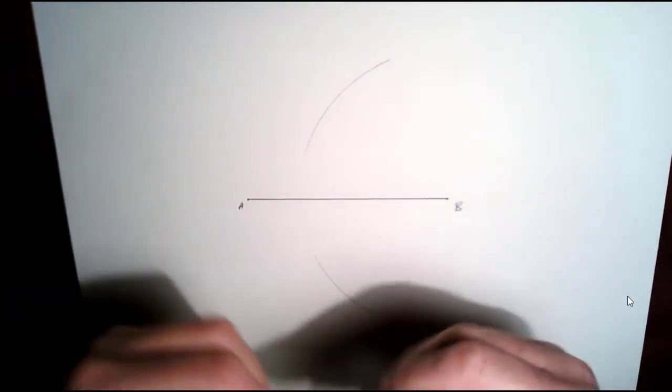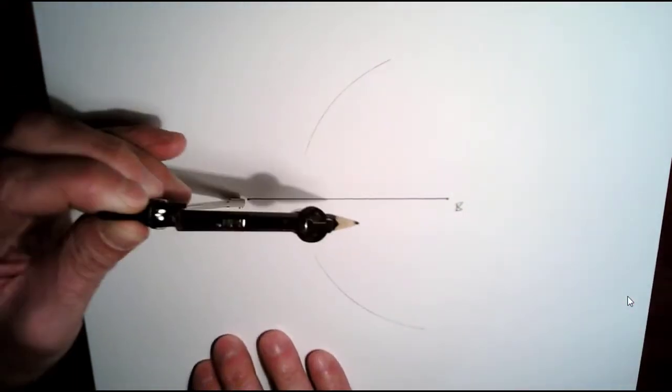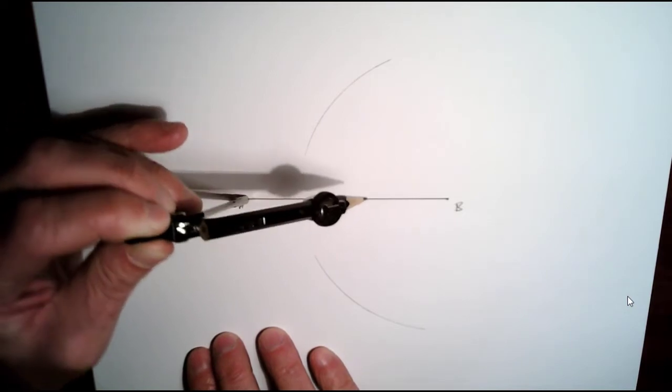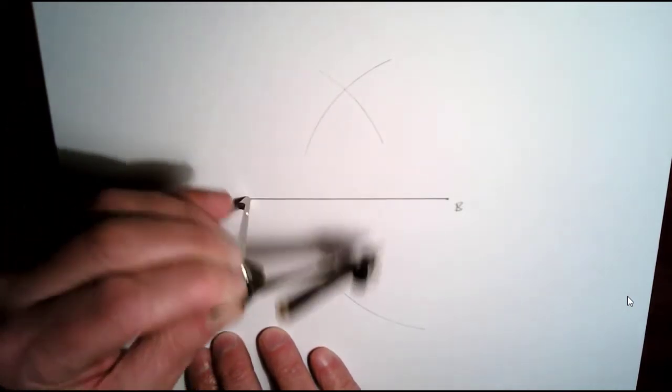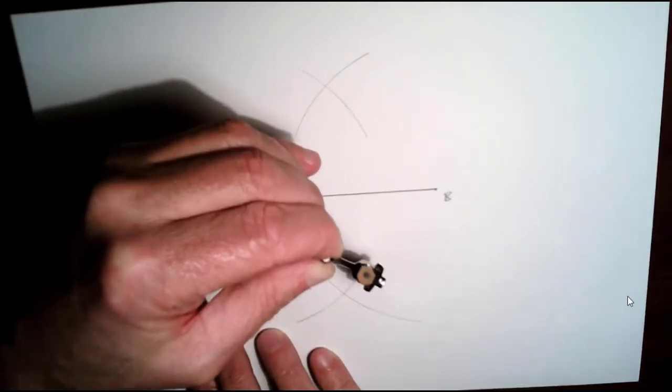So pick up your compass, turn it around, and do the same thing from the other side. Just put your compass at A, draw an arc here, draw an arc down here.